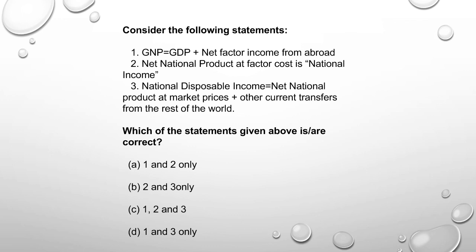National disposable income equals NNP at market price plus other current transfers from the rest of the world. So national disposable income is net national product at market price plus other current transfers from the rest of the world — option C, all are correct.